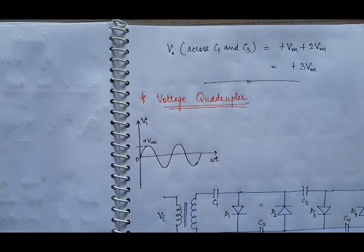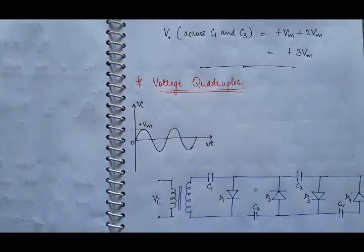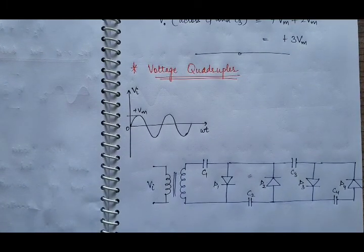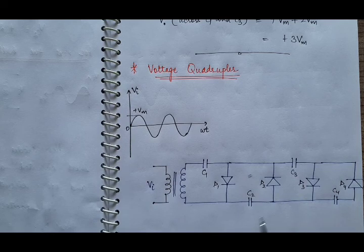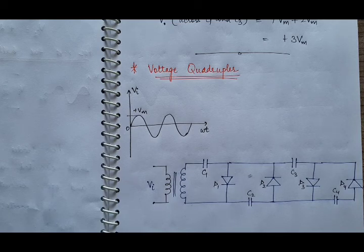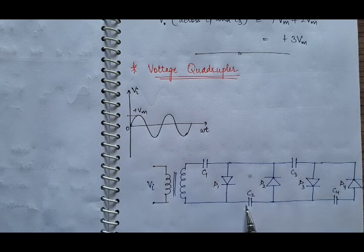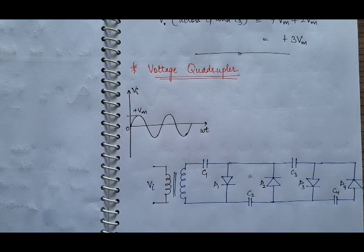Next is the voltage quadrupler. You have to write the theory for voltage quadrupler by yourself. In the case of a voltage quadrupler, the output voltage will be 4Vm — four times the peak input voltage. We will use 4 diodes and 4 capacitors. Assume all 4 diodes are ideal and all capacitors must be discharged initially before using them in the circuit.